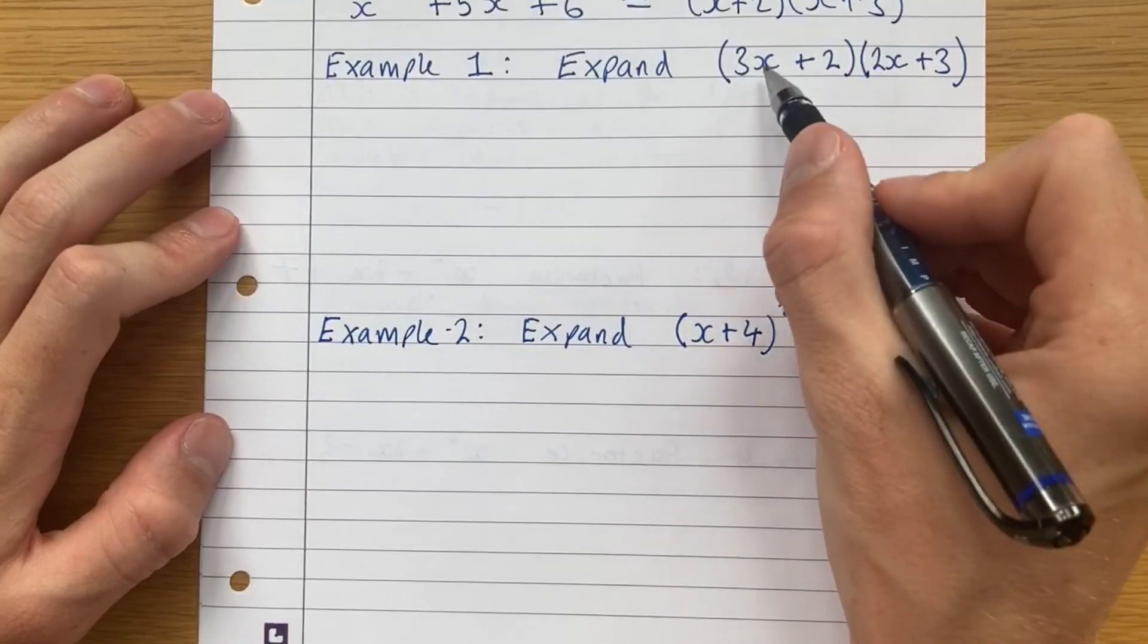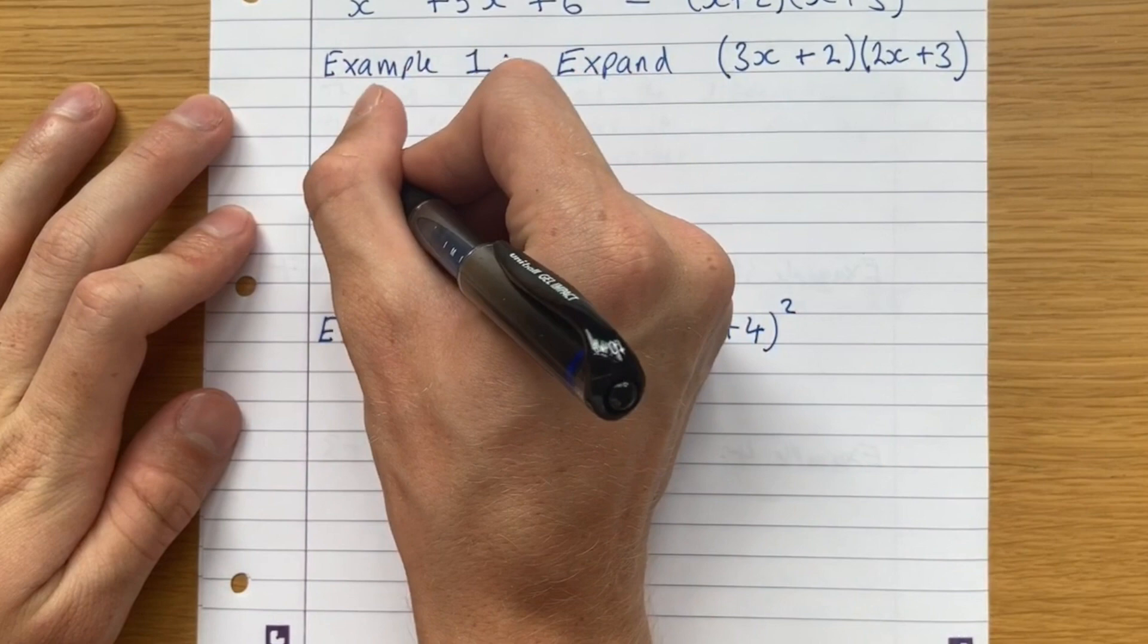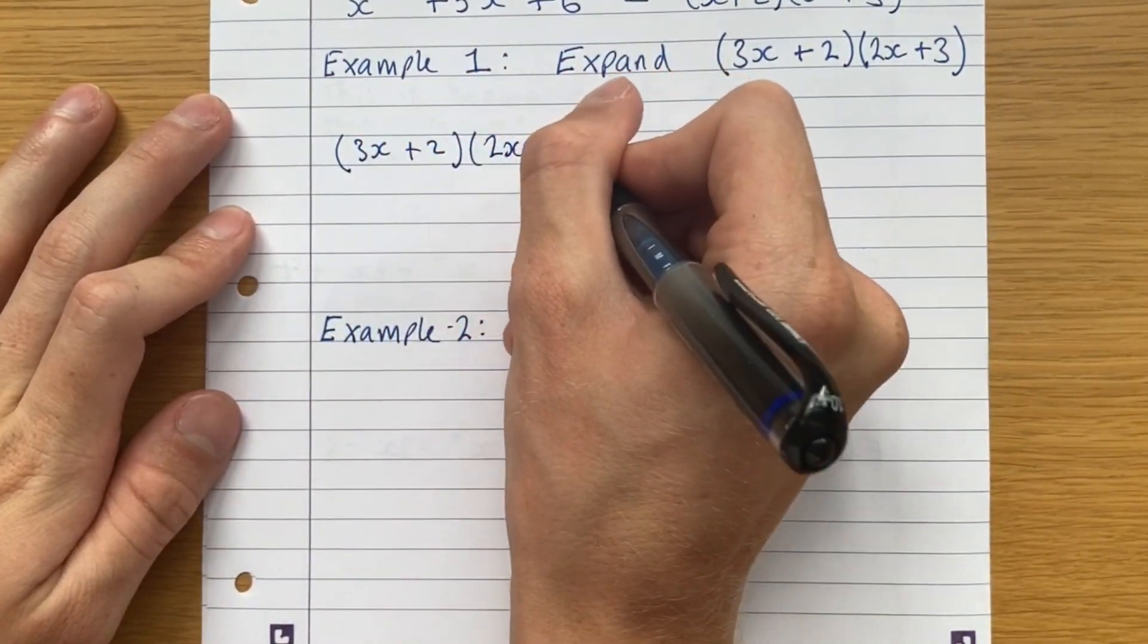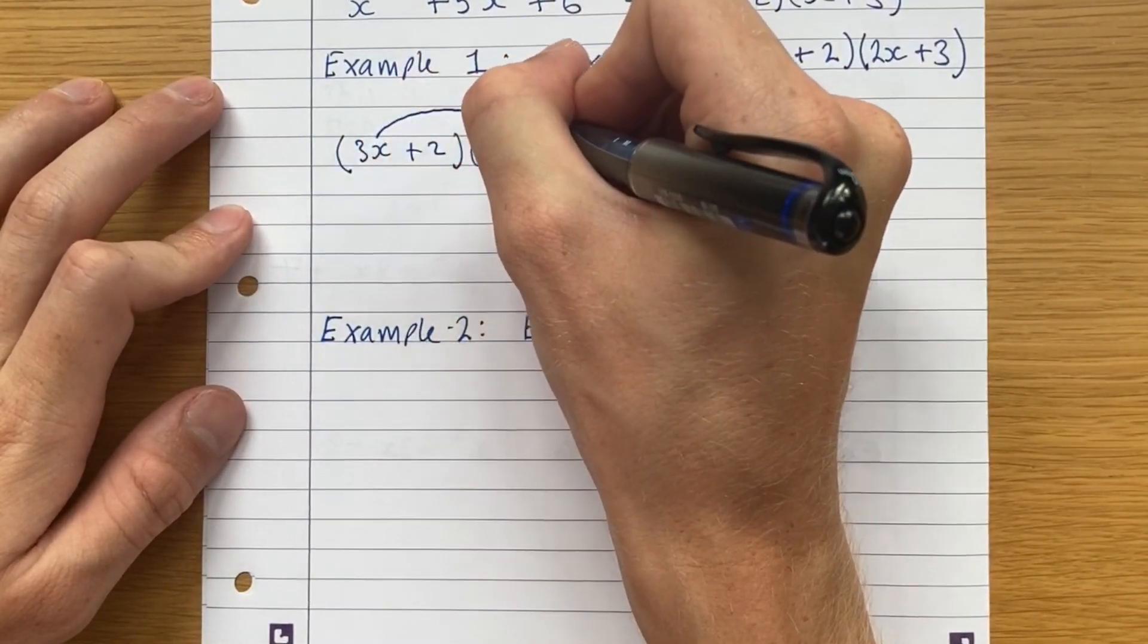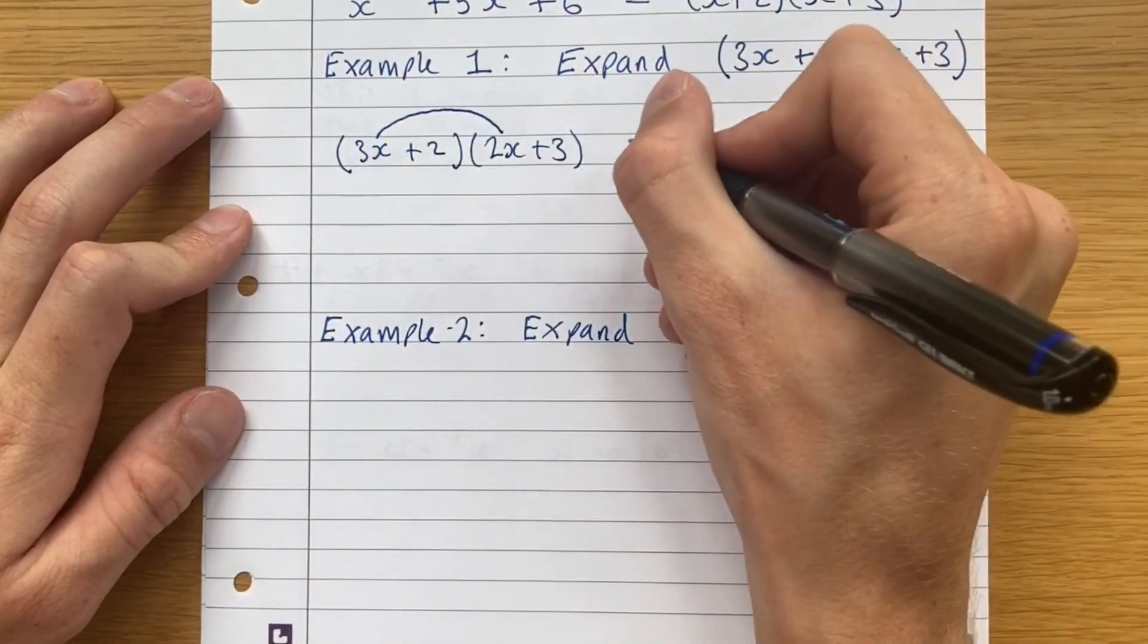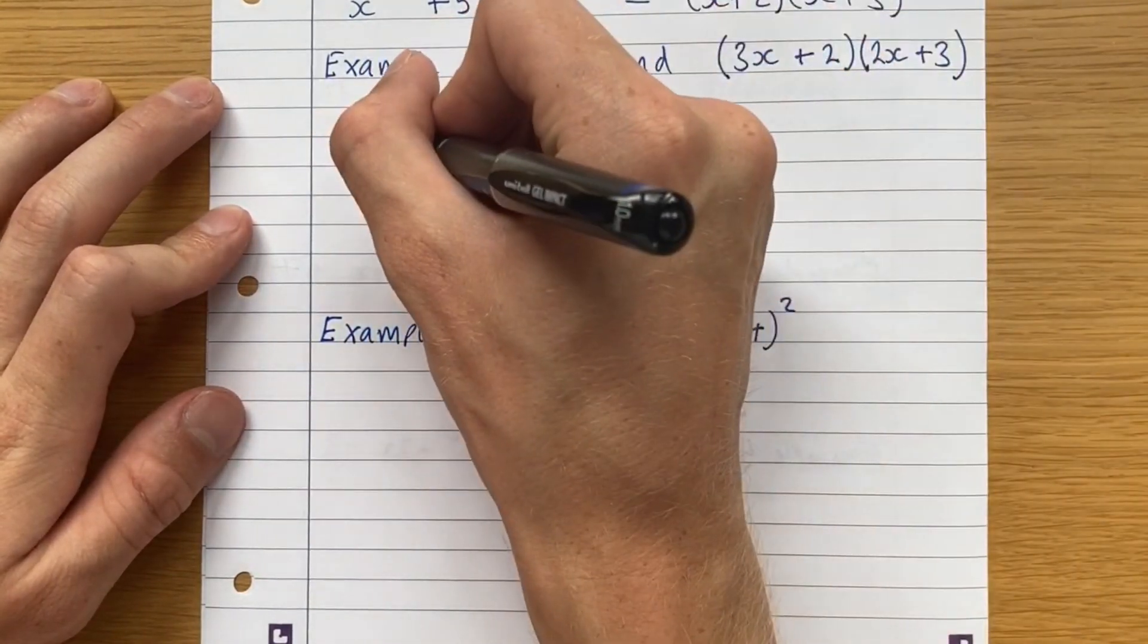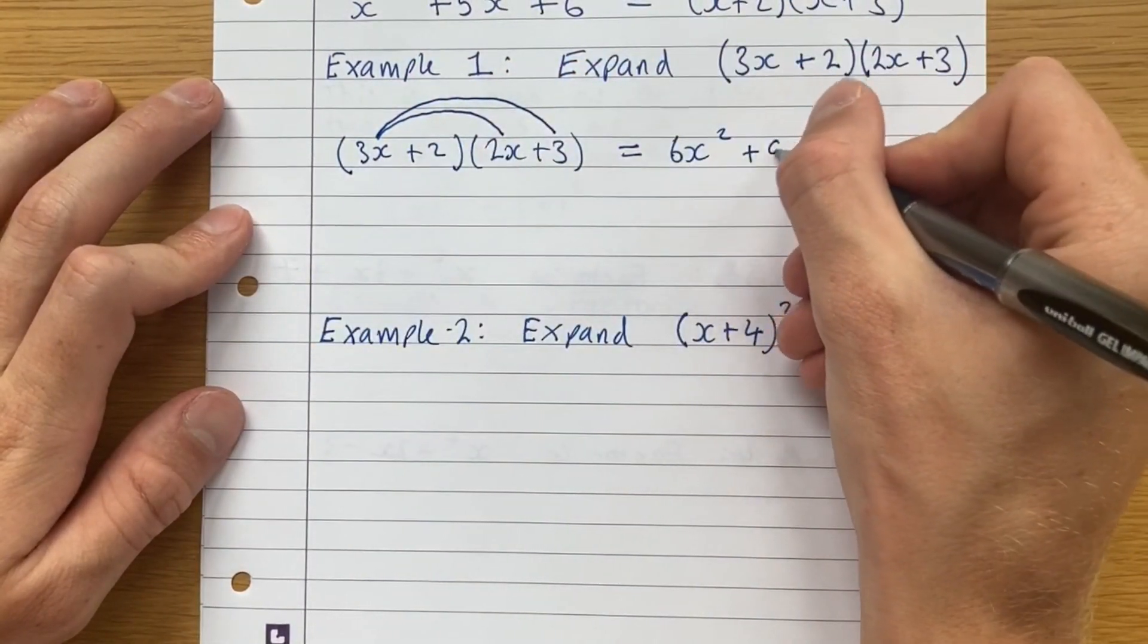So now we're expanding 3x plus 2 times 2x plus 3. So we're going to write it out, 3x plus 2, 2x plus 3. So let's draw the lines so we don't forget. So the 3x times the 2x, that's equal to 6x squared. And now same one by the second term in the second bracket, plus 9x.